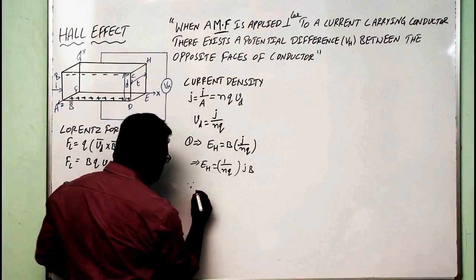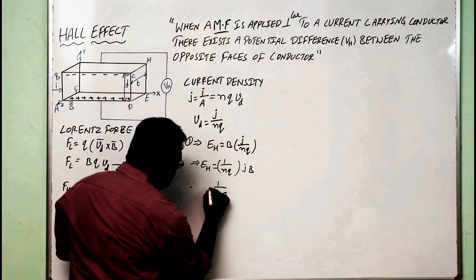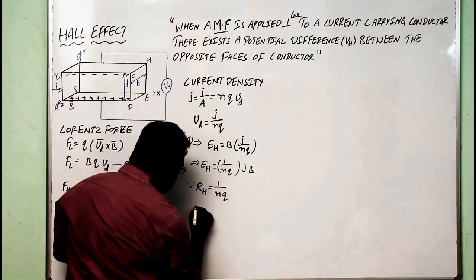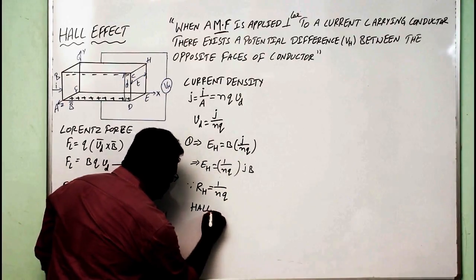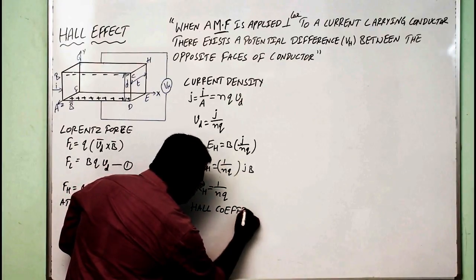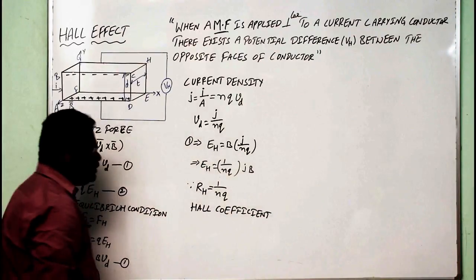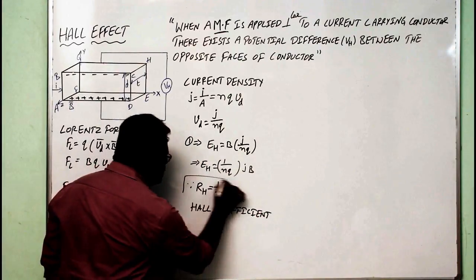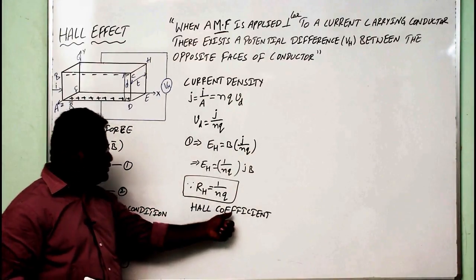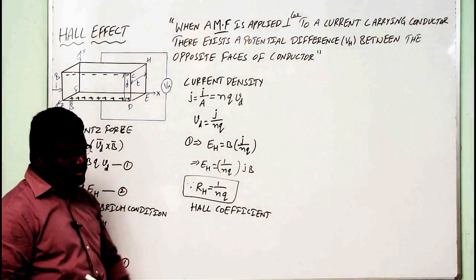Since 1/NQ is called R_H — the Hall coefficient — we can write E_H equals R_H·J·B. The Hall coefficient R_H equals 1/NQ, and this factor can decide whether the material is of n-type or p-type. Let us now see how.